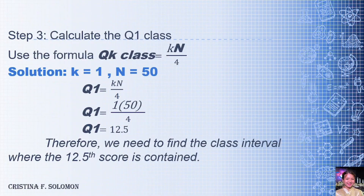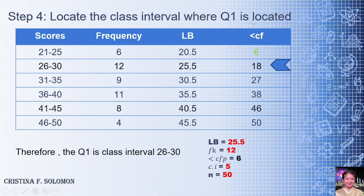The next step is to calculate the Q1 class position. Using the formula QK class = K × N / 4, where K = 1 and N = 50, we have Q1 = 1 × 50 / 4 = 12.5. Therefore, we need to find the class interval where the 12.5th score is contained, which we look up in the column of less than cumulative frequency.